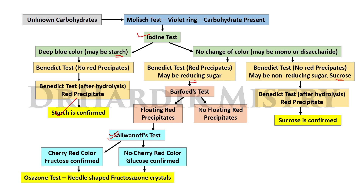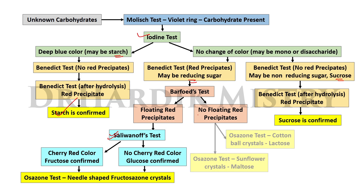If you are not seeing any cherry red color, glucose is confirmed. For confirmation, perform the osazone test — you will see needle-shaped fructosazone crystals. If on the Barfoed's test you are not seeing any floating red precipitates, go for the osazone test. If you see sunflower crystals, maltose is confirmed; if you see cotton ball crystals, lactose is confirmed.